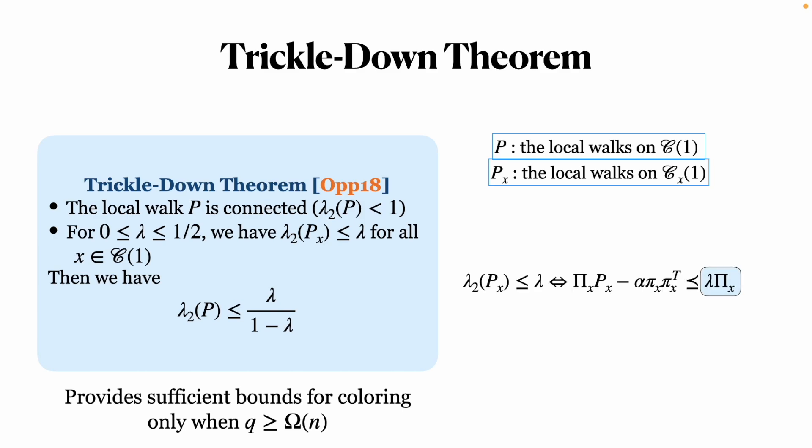To address this limitation, we compare more than just the second largest eigenvalue but the entire matrix. Our goal is to find a matrix upper bound for local walks, which is the main idea of matrix trickle down theorem.